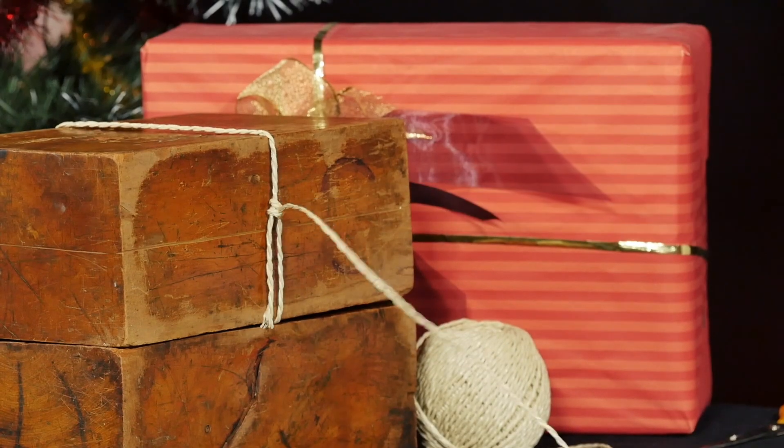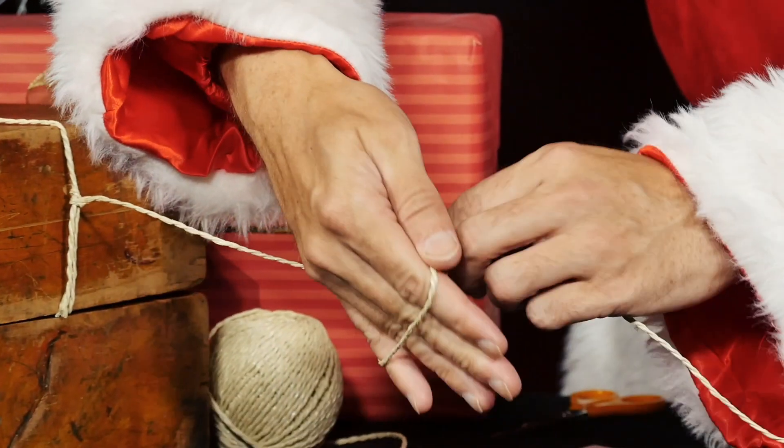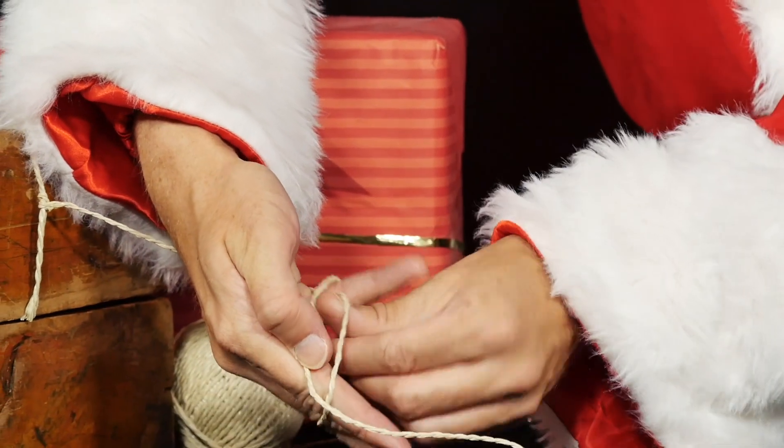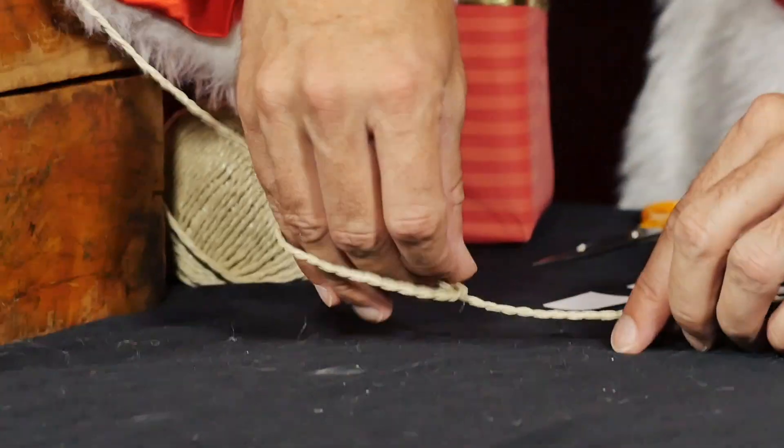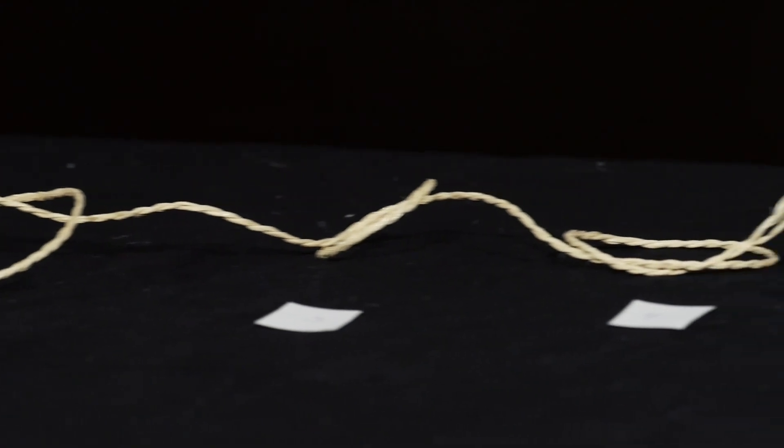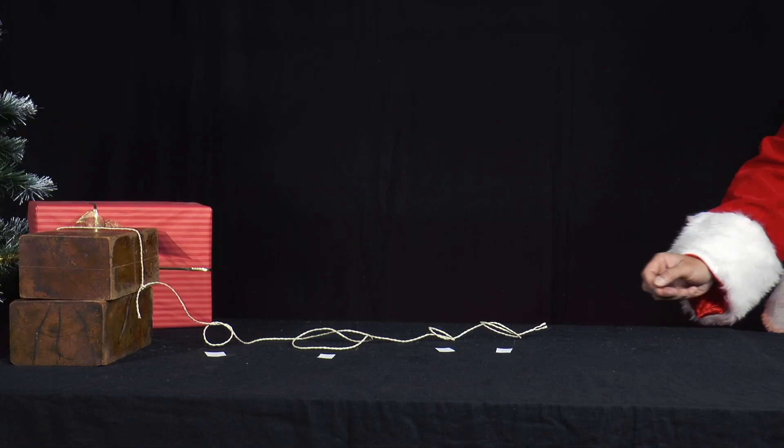He attaches one end to a solid object. Then he makes a small loop, a large loop, a small loop, and a medium-sized loop.